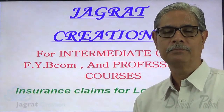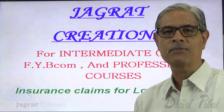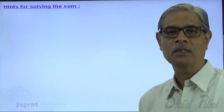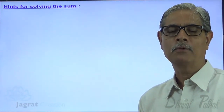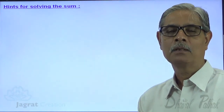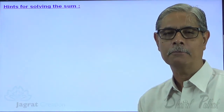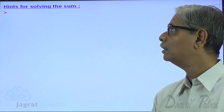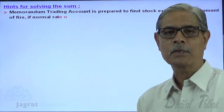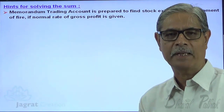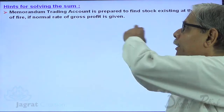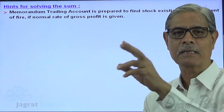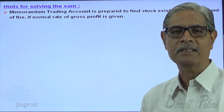I am going to solve one sum here before you. Before that I will give you hints for the purpose of solving the sum. We are required to find out the insurance claim for loss of stock due to fire, for which we need to find out the stock that existed at the moment of fire. We find that by preparing a memoranda trading account, where gross profit details are available based on past experience or policy. If the rate of gross profit is available, we can prepare a trading account, write the gross profit based on that rate, and find out the closing stock as a missing item on the credit side — labeled as stock existed at the moment of fire.